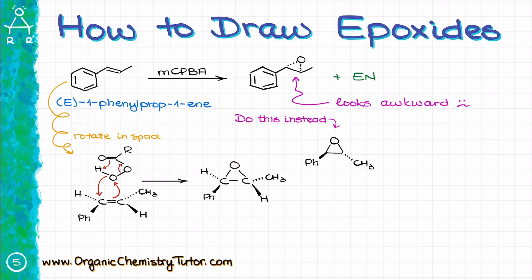So the phenyl is still looking at me and the CH3 is still looking away from me. Likewise, if I were to do this attack from the bottom face of the molecule, I will end up with the epoxide looking down, but still in the plane of paper while the rest of the groups are looking in the corresponding direction. This way you are pointing the rest of the molecule in different directions rather than trying to poke the epoxide ring towards you or away from you.